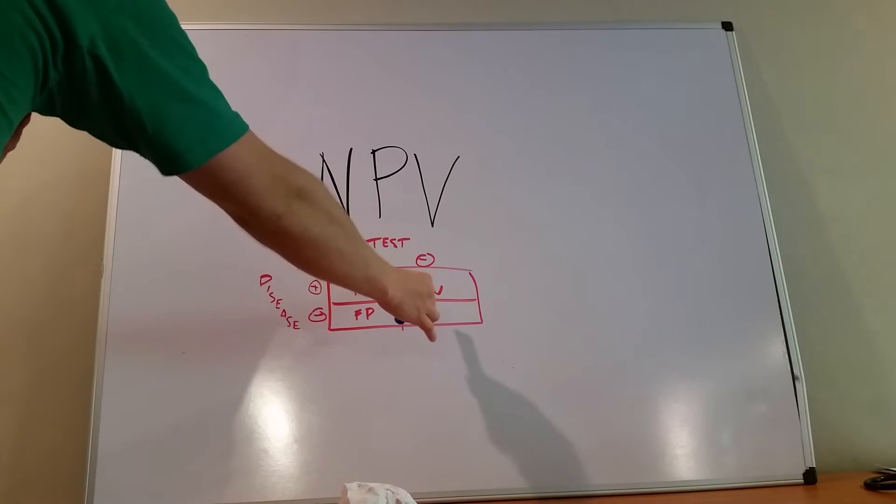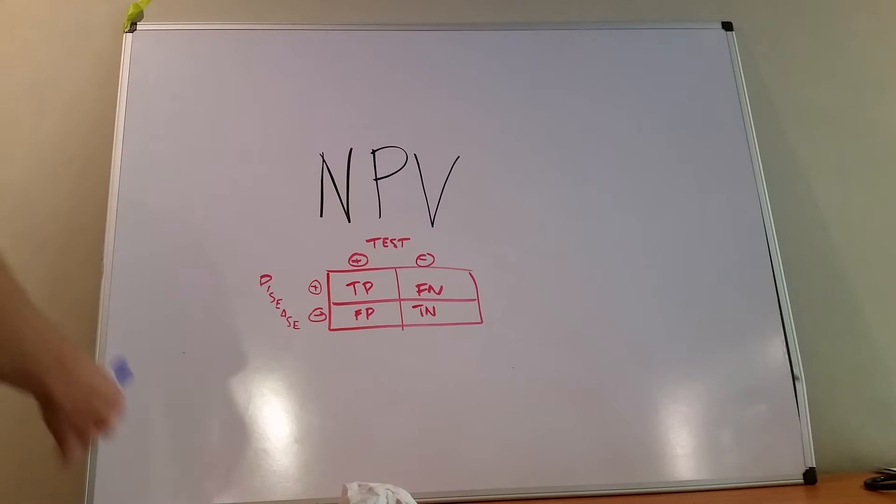Here we have this classic two by two square that examines the different types of outcomes of tests and whether or not you have a disease. We've talked about this in several videos, so I'm just going to run through it very quickly.